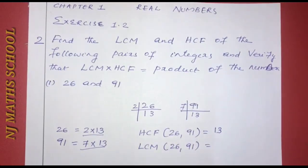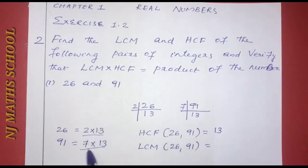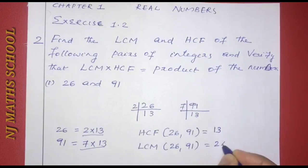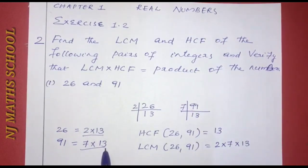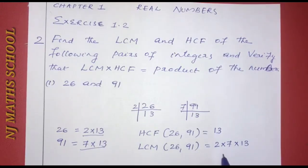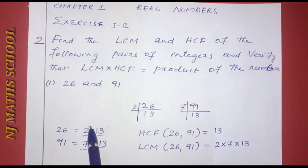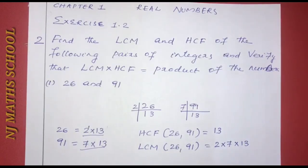Now for LCM of 26 and 91. The prime numbers present are 2, 7, and 13. These are all prime numbers taken at their highest power. So LCM is 2 × 7 × 13.